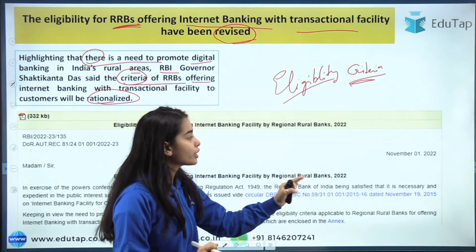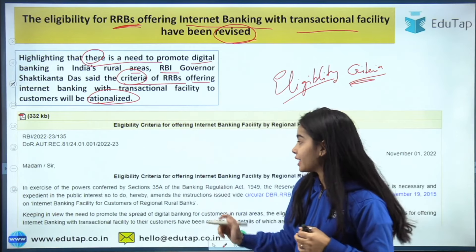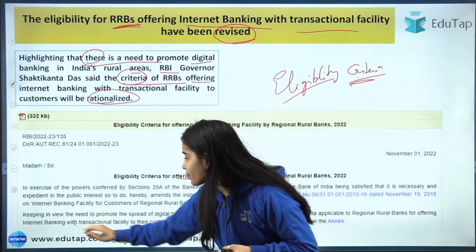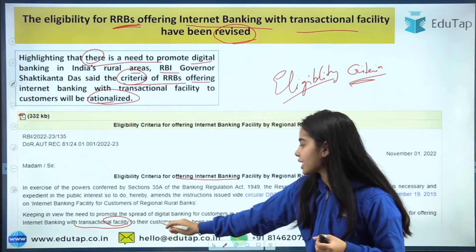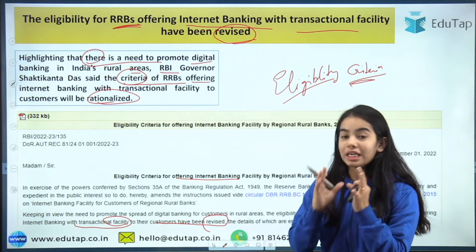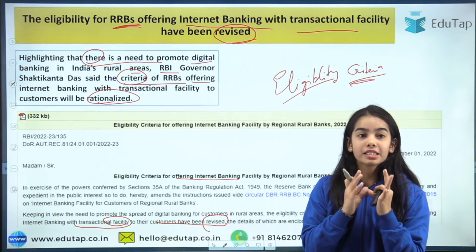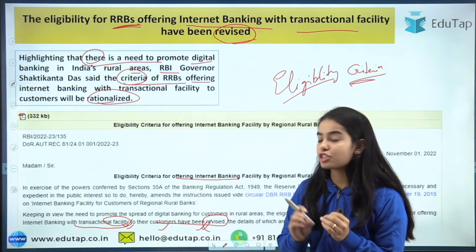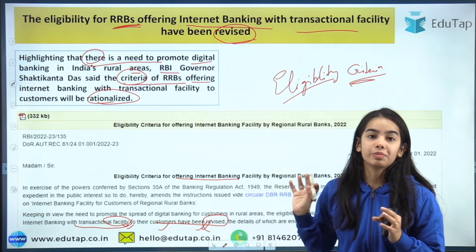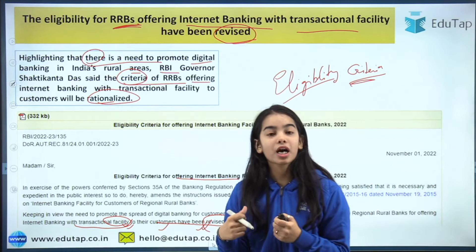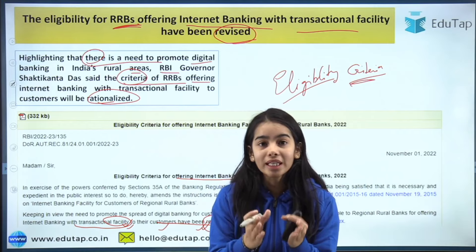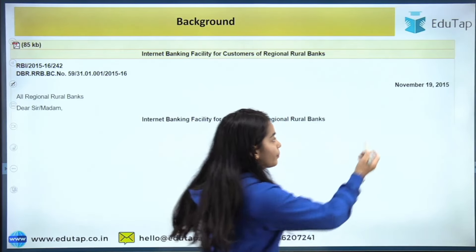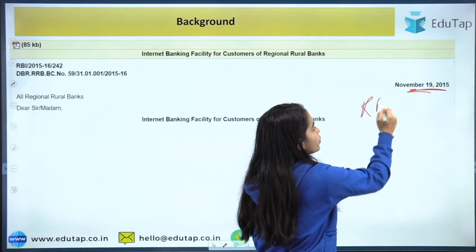On November 1st, 2022, the eligibility criteria for offering internet banking with transactional facility to customers has been revised. Now, looking at the context before 2015 — the Regional Rural Banks were created to provide basic banking and financial services to rural India.